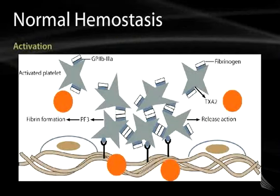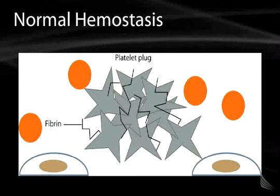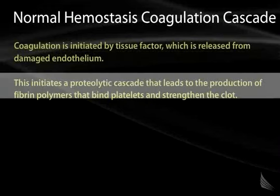To follow up on the graphic representation, the star-shaped cells are the activated platelets, and you can see they are cross-linked and adhered to one another via fibrinogen as well as the glycoprotein 2B3A system. This platelet plug is further cross-linked with fibrin to form a stable clot. Coagulation itself is initiated by tissue factor released from the damaged endothelium, initiating a proteolytic cascade that produces fibrin polymers which bind to the platelets and further strengthen the clot.